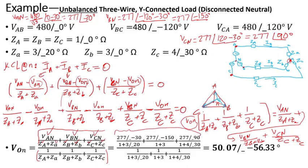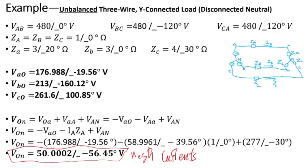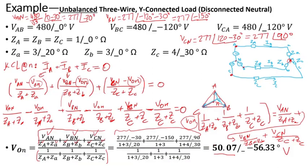Carrying out the calculation, I get 50.07 volts with an angle of negative 56.33 degrees, which is very close to the value obtained using the mesh current method.